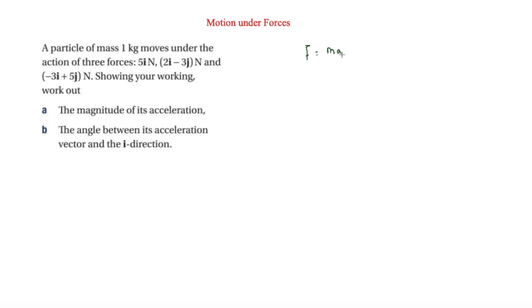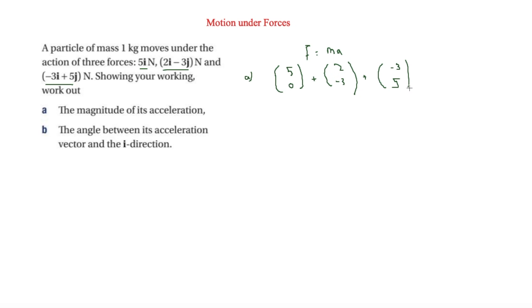We know M is 1, and we need to work out F from the three forces. In the first force we have 5 horizontally and 0 vertically. In the second we have 2 horizontally and minus 3 vertically. Finally, minus 3 horizontally and 5 vertically. That equals MA, and since M is 1, it equals A. So A is 5 plus 2 minus 3 which is 4 horizontally, and minus 3 plus 5 which is 2 vertically.